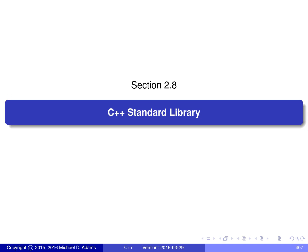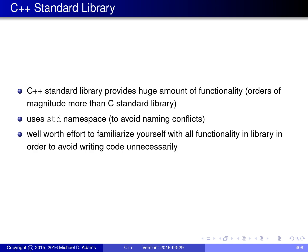In this section, I'm going to talk about some aspects of the C++ standard library. The C++ standard library provides a huge amount of functionality, and the standard library uses the std namespace, so all of the identifiers in the standard library use this namespace in order to avoid naming conflicts with other code. I highly recommend that you get well acquainted with the functionality in the standard library so that you can avoid writing code unnecessarily.